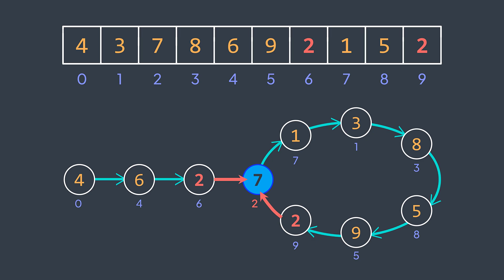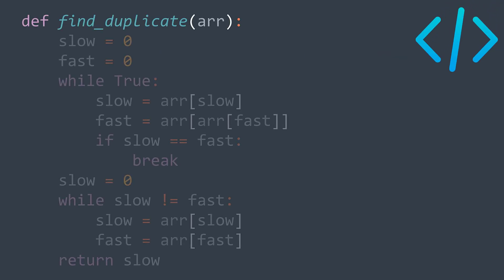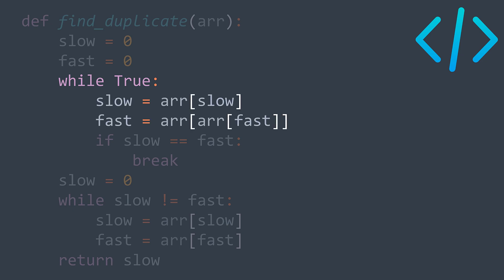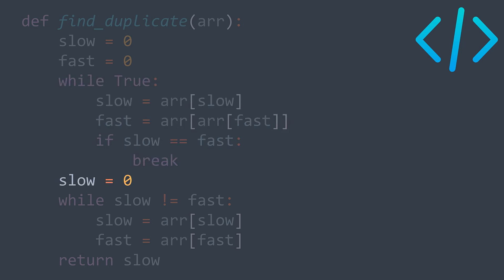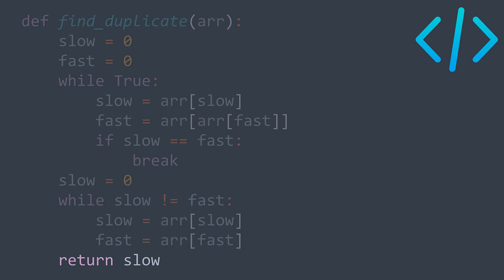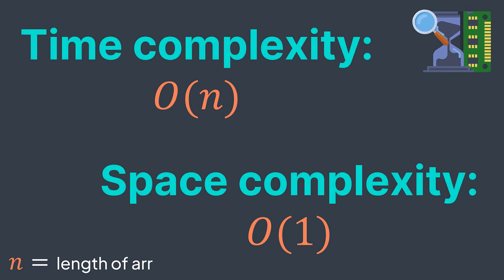We don't actually need to create the linked list; we just use indexes to move between nodes. We put two pointers slow and fast at index zero (the head). Since a cycle is guaranteed by the pigeonhole principle, we write while true: slow = arr[slow], fast = arr[arr[fast]], and break when they meet. Then we take slow back to index zero, and while slow and fast haven't met, move them both by one: slow = arr[slow], fast = arr[fast]. After they meet, both represent the index of the cycle's entry point — the duplicate value — so we return one of them. This gives O(n) time and O(1) space, using only two integer variables.